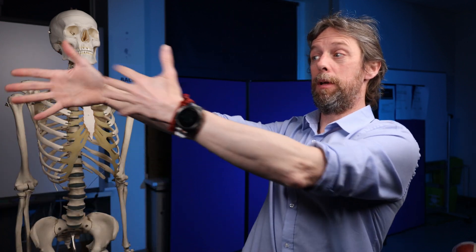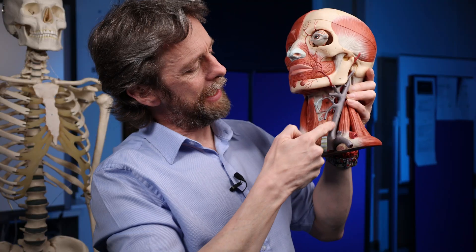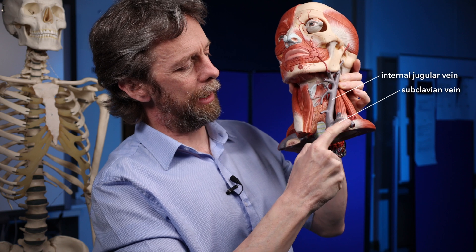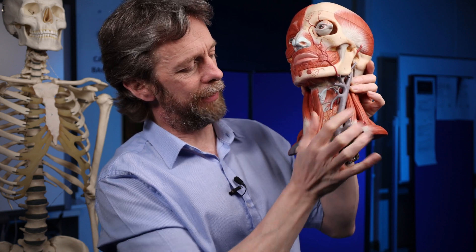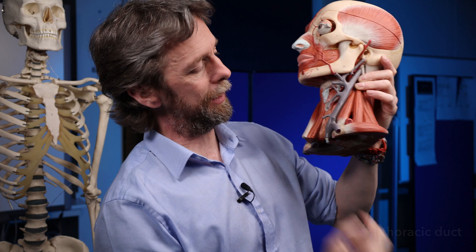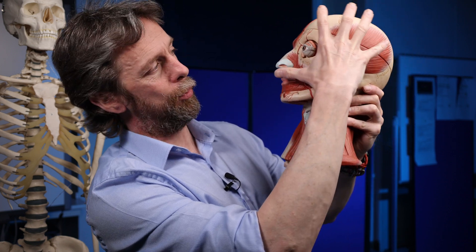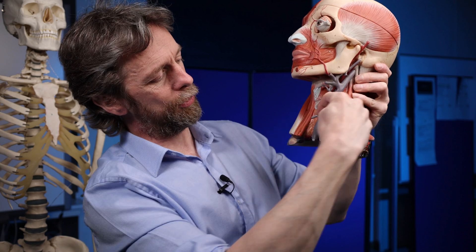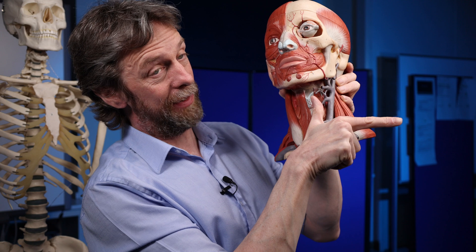Lymphatic flow is from superficial to deep and from distal to proximal. That's easy to describe with a limb, but the head and neck is a little bit more awkward. Essentially this here is the internal jugular vein, draining blood from the cranial cavity and face. This is the subclavian vein, and when they come together they form the brachiocephalic vein — this gets called the venous angle. And in here the thoracic duct will drain lymph from most of the body into this point. So lymph from the left side of the head and neck will also drain into the venous blood at this venous angle.